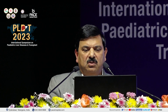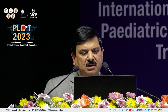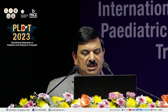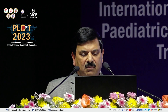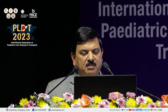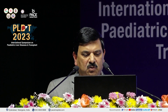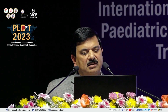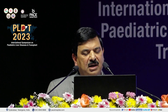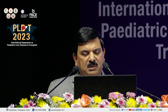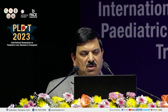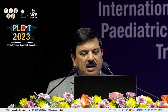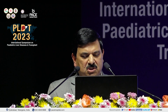One terminology is portosinusoidal vascular disorder (PSVD). Under this, the first cause is NCPF. When to suspect NCPF: when varices are noticed on endoscopy, there could be splenomegaly, collaterals are diagnosed on imaging, stiffness is less than 10 kPa, and if HVPG is less than 10, that is a strong consideration of PSVD. There are also other disorders including schistosomiasis under this category.